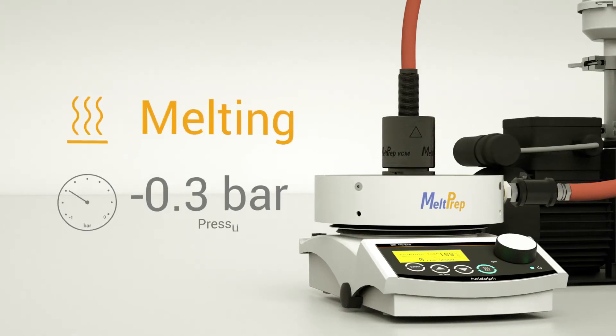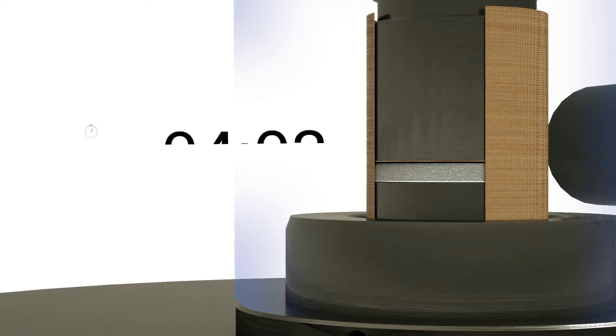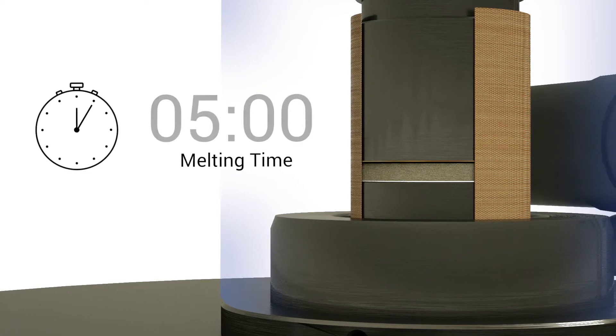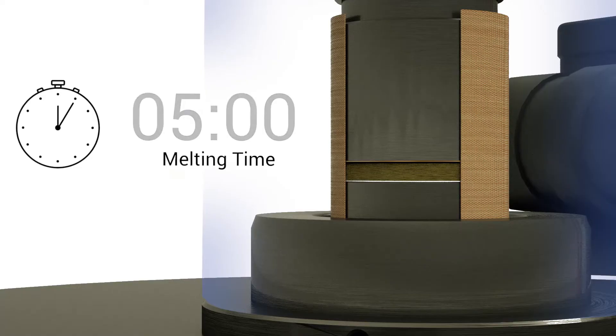Place the VCM tool on our innovative hot plane equipped with vacuum clamping to begin the melting process. The compact design of the VCM tool drastically reduces the melting time. Additionally, a vacuum is applied to prevent bubbles in the sample.